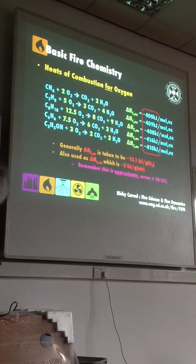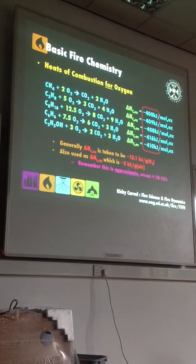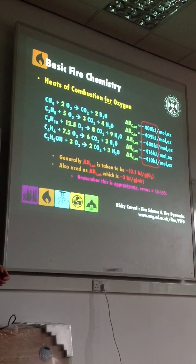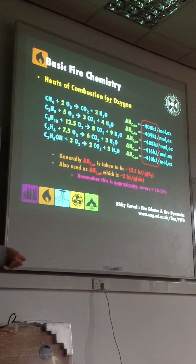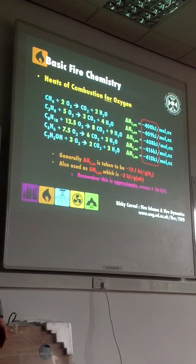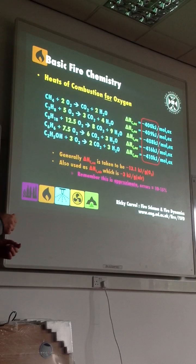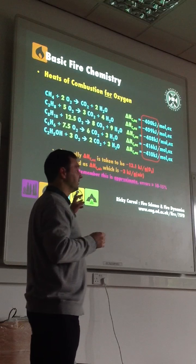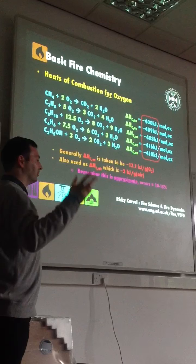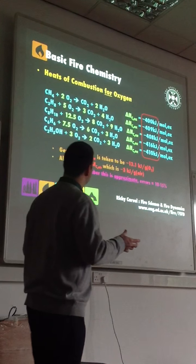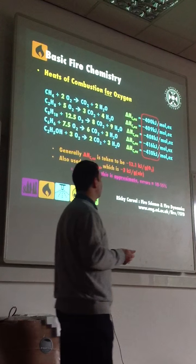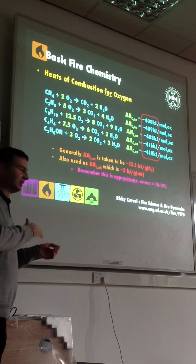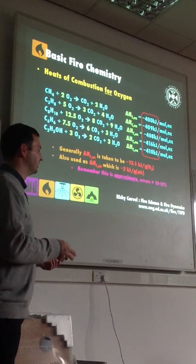Remember, it's approximate. Depending on what the chemicals are, there are error bars of possibly 10–15% in that calculation. So if I ask you in a tutorial or an exam to do a calculation involving the heat of combustion per gram of oxygen, I don't want to see three decimal places of accuracy. If it comes to 2.013-something, it's two. Also, in the literature it's often expressed as heat of combustion per gram of air — bearing in mind that nitrogen is almost always there — and that value is about 3 kilojoules per gram of air, assuming 21% oxygen to 79% nitrogen with no CO₂ or water in the air to begin with.